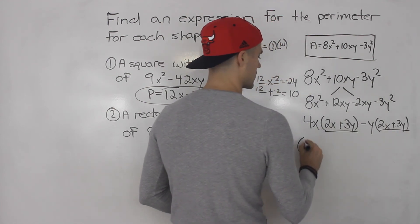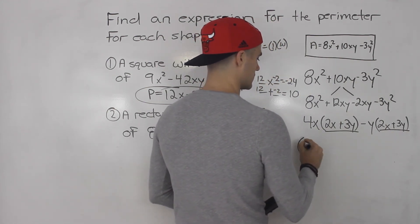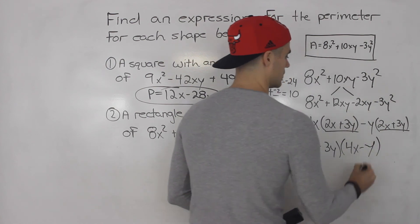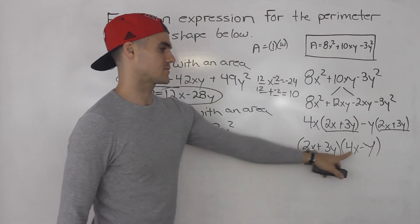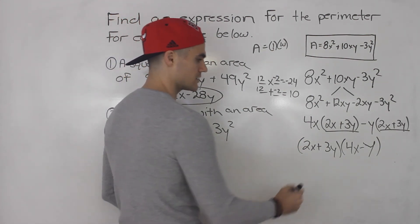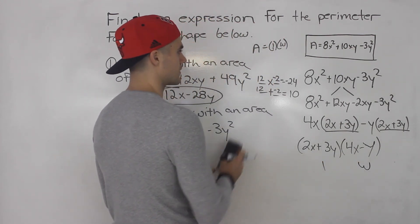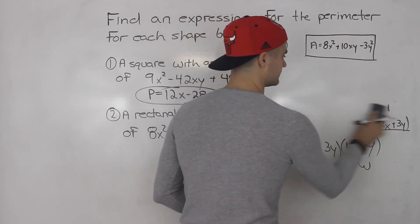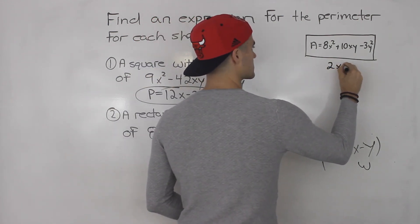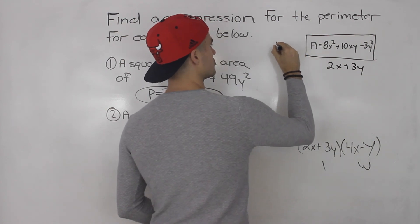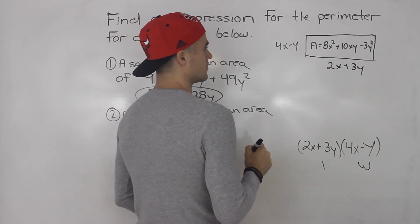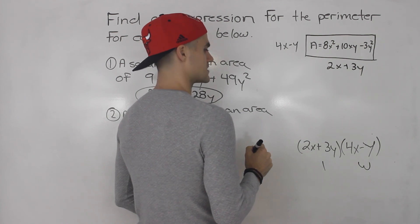From the last two terms we factor out negative y, leaving 2x plus 3y. So we can factor out the common bracket, giving us (4x minus y)(2x plus 3y). These two expressions represent the length and the width. It's hard to tell which is larger, so let's call 2x plus 3y the length and 4x minus y the width.